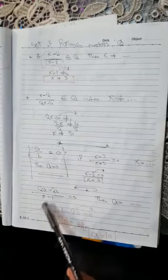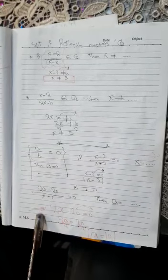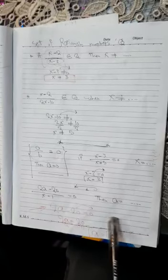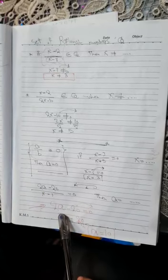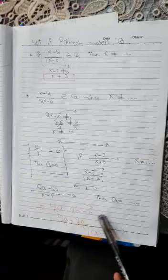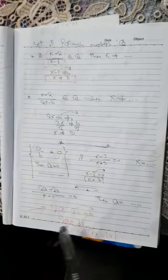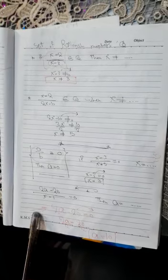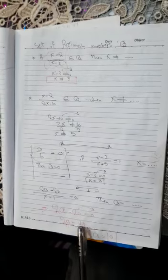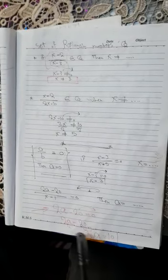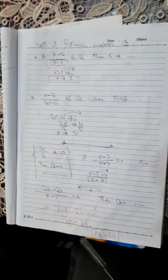If (2a-20)/(x-1) equals zero, then we work on the numerator: 2a minus 20 equals zero, so 2a equals 20. We divide both sides by 2: a equals 10.